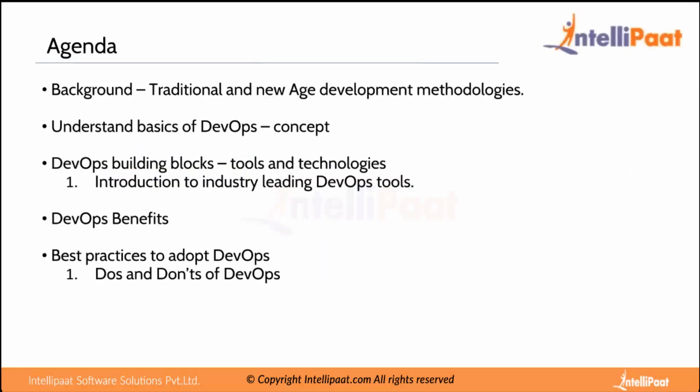Let me first tell you what DevOps actually is. According to the definition, it says it's a collaboration of development and ops — but exactly, it is not just that. It is actually a process. Normally in a software company, people write code — those people are called developers. They write programs and compile that code. If it's a Java program, you compile it into a binary, which is executable and runs on a server from where people access the software through a front end.